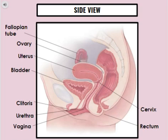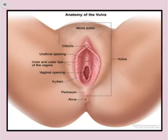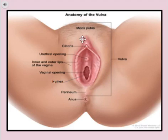And then we have the rectum, which is right here. So that's a side view. And finally, the third one is going to be the anatomy of the vulva. This whole part is called the vulva, right in here. So this is on the outside of a female's body.